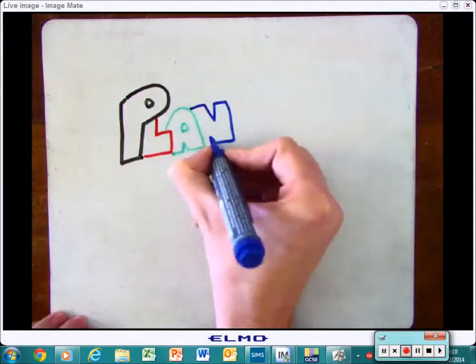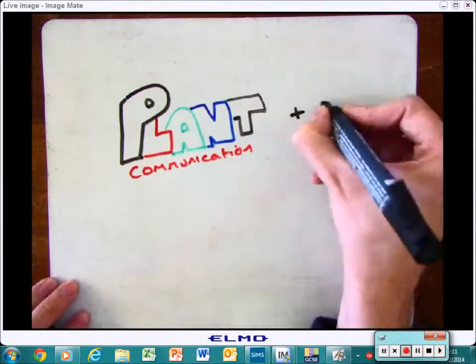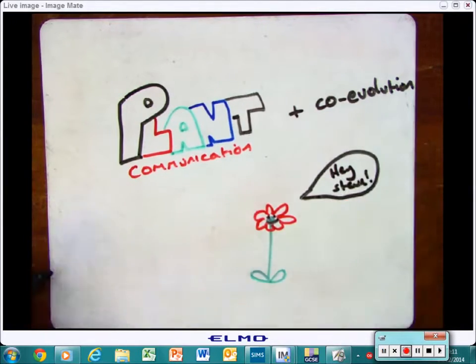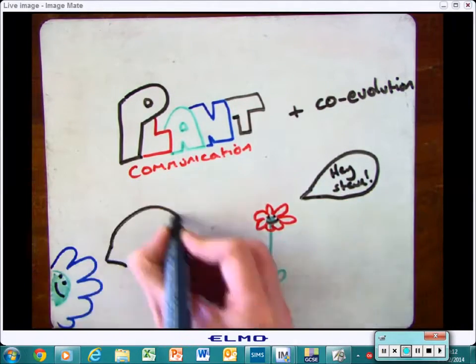This video is going to have a look at plants and how they communicate. This is going to involve how they communicate with animals, how they communicate with each other, and how it's led to the co-evolution of plants and animals.